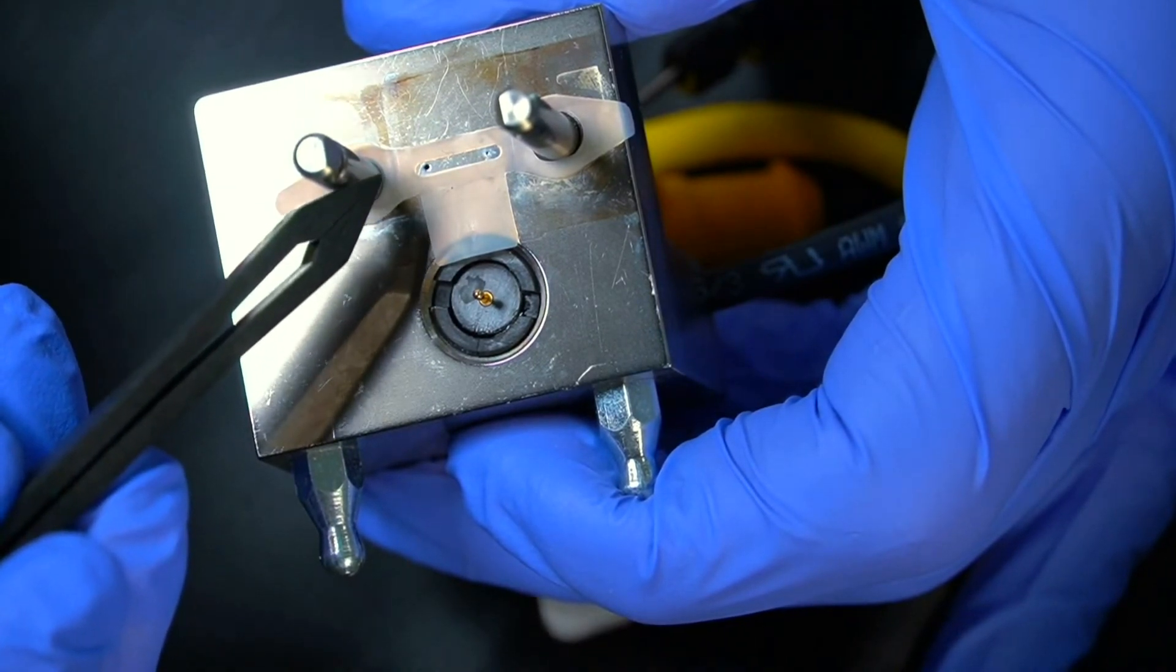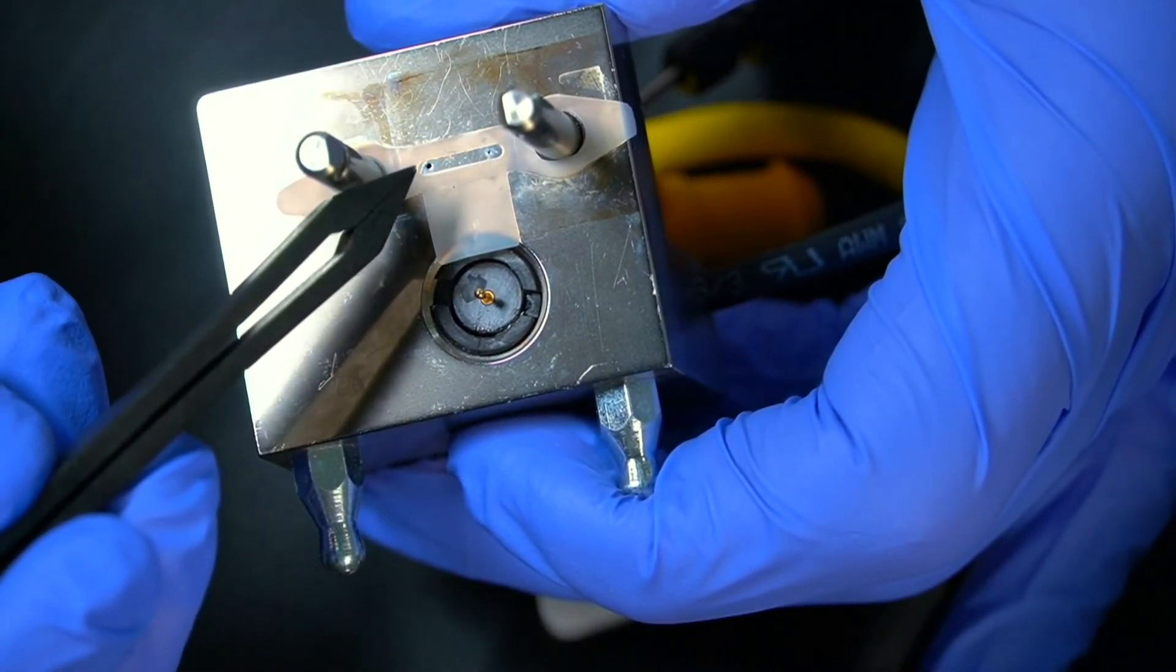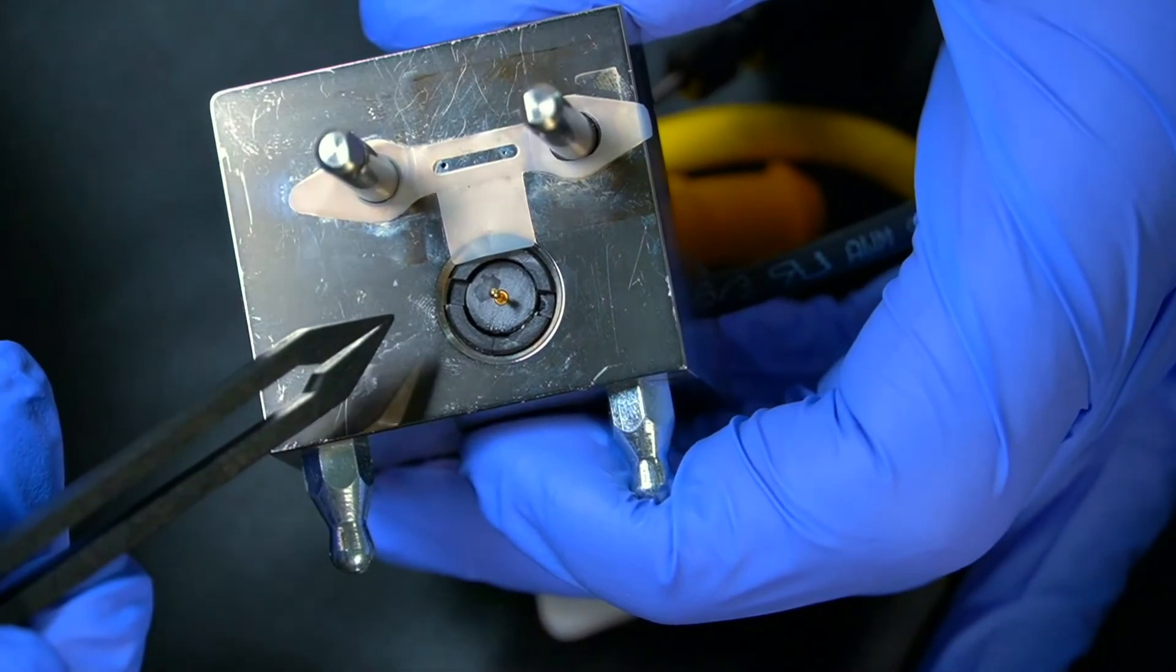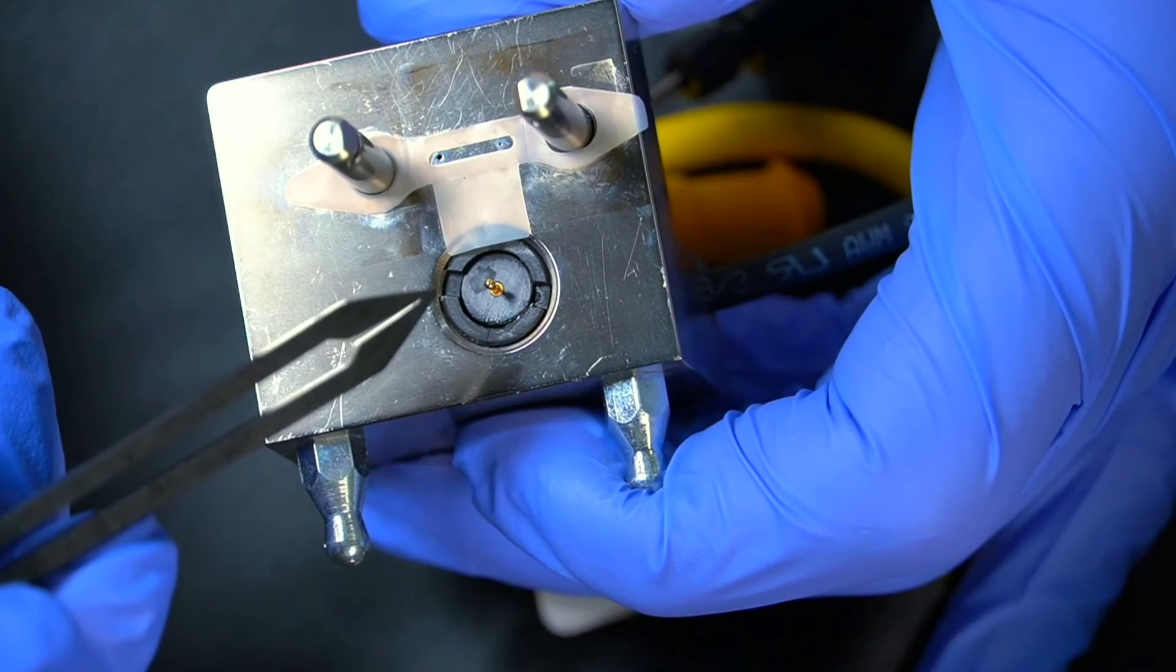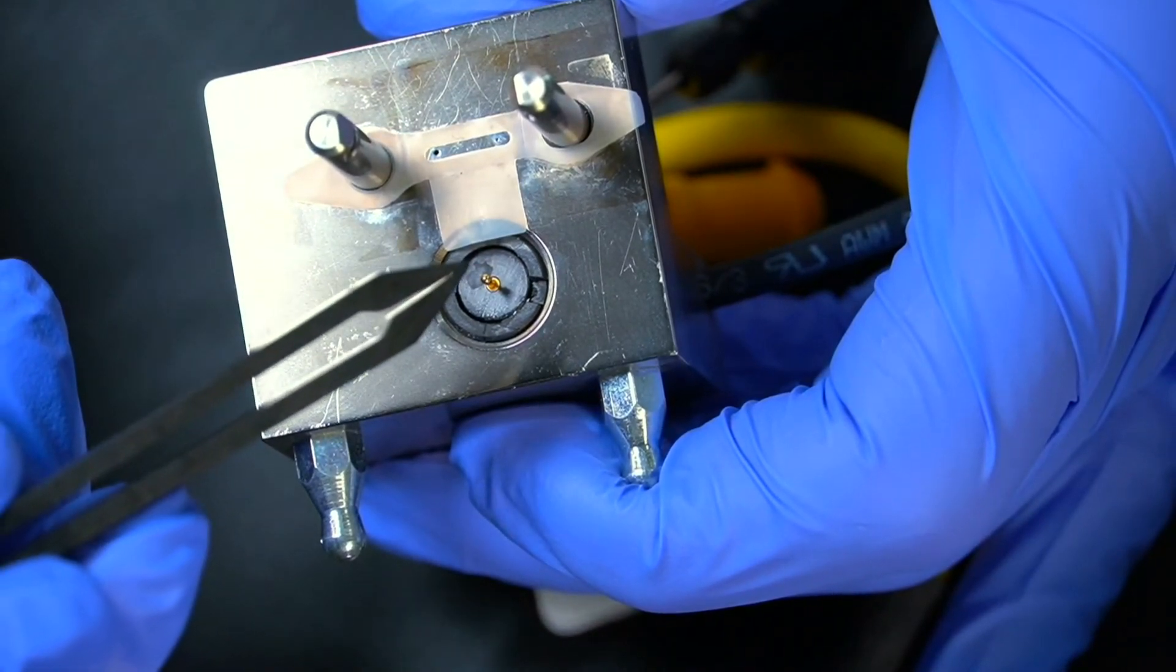The eluent flows in one side of the slot, flows through the slot and over the surface of the working electrode. That's where the reaction happens and where the currents form that give you your peaks, and it flows out of the other side.